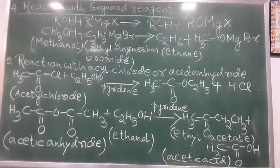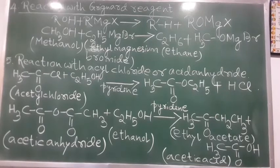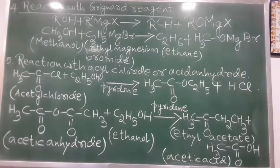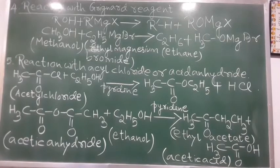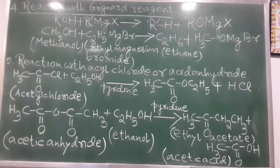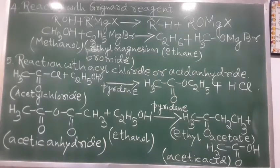The next reaction is very important because it comes in the exam. When alcohols are treated with acid chloride or acid anhydride in the presence of bases like pyridine or dimethyl aniline as catalyst, the hydrogen atom of the OH group is replaced by an acyl group, forming an ester. Example one: acetyl chloride with ethanol in the presence of pyridine forms ethyl acetate CH₃COOC₂H₅ plus HCl. Example two: ethanol with acetic anhydride forms ethyl acetate and acetic acid.